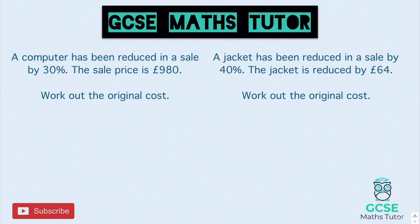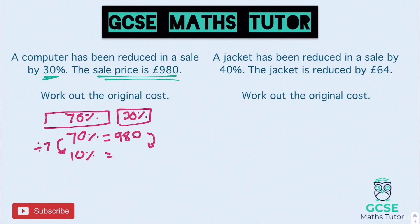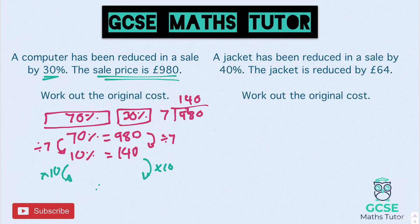Let's have a look at the first practice question. A computer has been reduced in a sale by 30%, and the sale price is £980. So that £980 is the amount we're actually going to pay. If we draw our little bars, we've got 30% being the sale amount and 70% being the amount we actually pay. So 70% equals £980. We divide by 7 to get 10%, and doing 980 divided by 7 — 7 goes into 9 once remainder 2, then into 28 four times — so £140 is 10%. Times by 10 to get 100%, giving us £1,400 as our original amount.